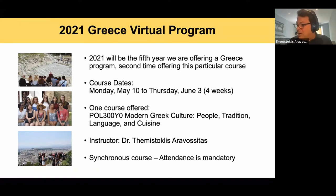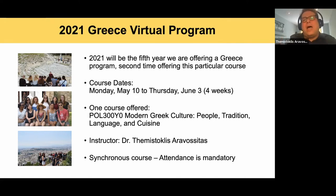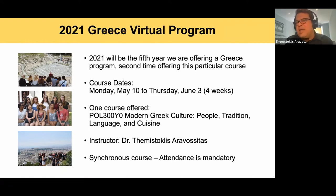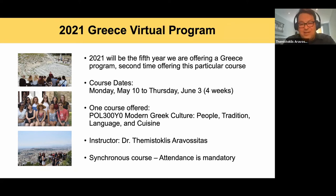One positive thing about the virtual course is that when we go to Greece physically, we can only visit sites near Athens and do a couple of trips. But virtually, we'll be able to see amazing, spectacular places like Meteora, Mount Olympus, Epidaurus and the ancient theater, Delphi and the Oracle, the Aegean islands, Crete, and other things — there will be a few surprises when we start the program.